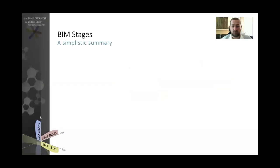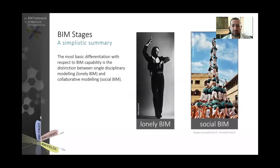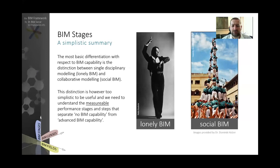When we define BIM Stages, we can define it very simplistically using terms like Lonely BIM and Social BIM. Lonely BIM refers to one company delivering model-based deliverables on their own, perhaps just improving their internal ability to extract drawings from models. Social BIM involves more than one company or discipline working together to generate more model-based deliverables. Although this simplistic definition makes sense, it is not really useful when we want to measure the capability of organizations or improve our own capability. We need something more measurable — something that helps us understand how a company moves from no capability to advanced BIM capability.